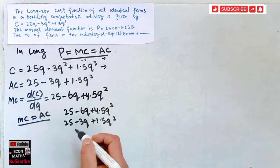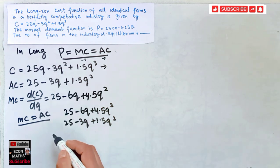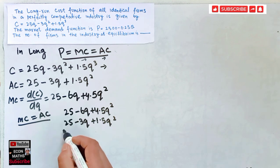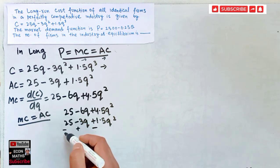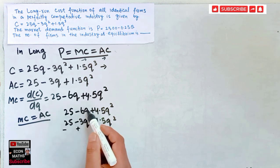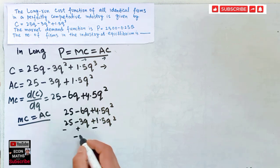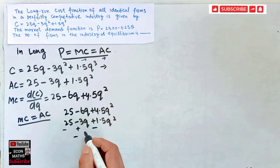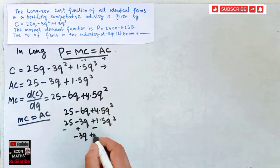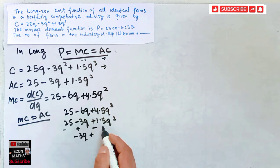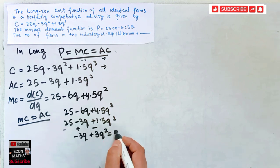Now solving this equation: 25 − 25 = 0, and −6q + 3q = −3q, and 4.5q² − 1.5q² = 3q². So we get 3q² − 3q = 0, which should be equal to zero.